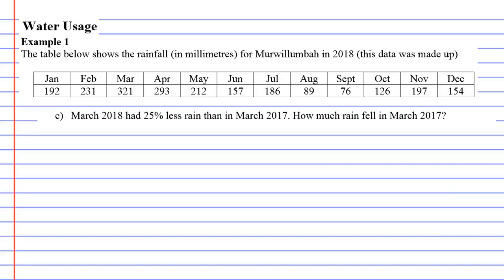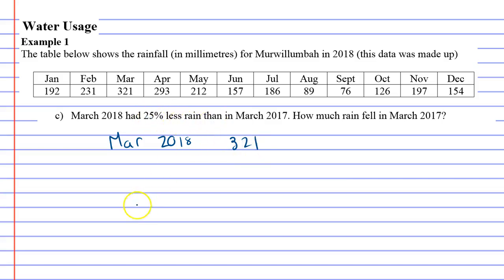We're up to part C of example one and this one's going to be our difficult question. March 2018 had 25% less rain than in March 2017. So let's look at that. March 2018, we already know how much rain fell then — 321 — and it's 25% less than what happened in March 2017.